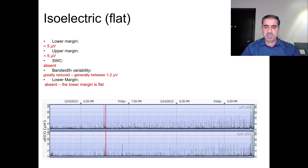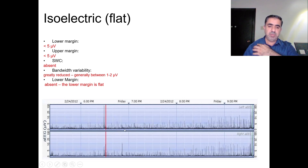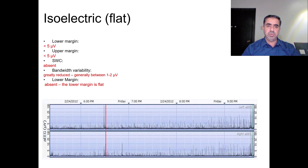The last tracing, indicating the greatest severity of encephalopathy, is the isoelectric or flat line. The lower margin is definitely below 5, and the upper margin is also below 5. There is no sleep-wake cycle, bandwidth variability is greatly reduced to generally between 1 and 2 microvolts, and lower margin variability is absent. These were the five major tracings that you have to recognize.